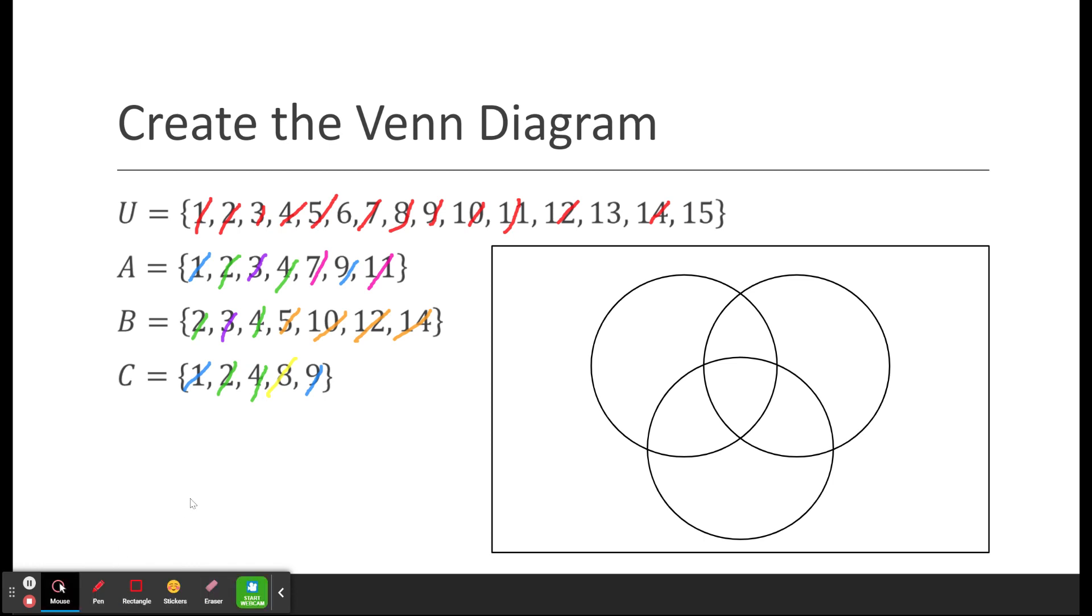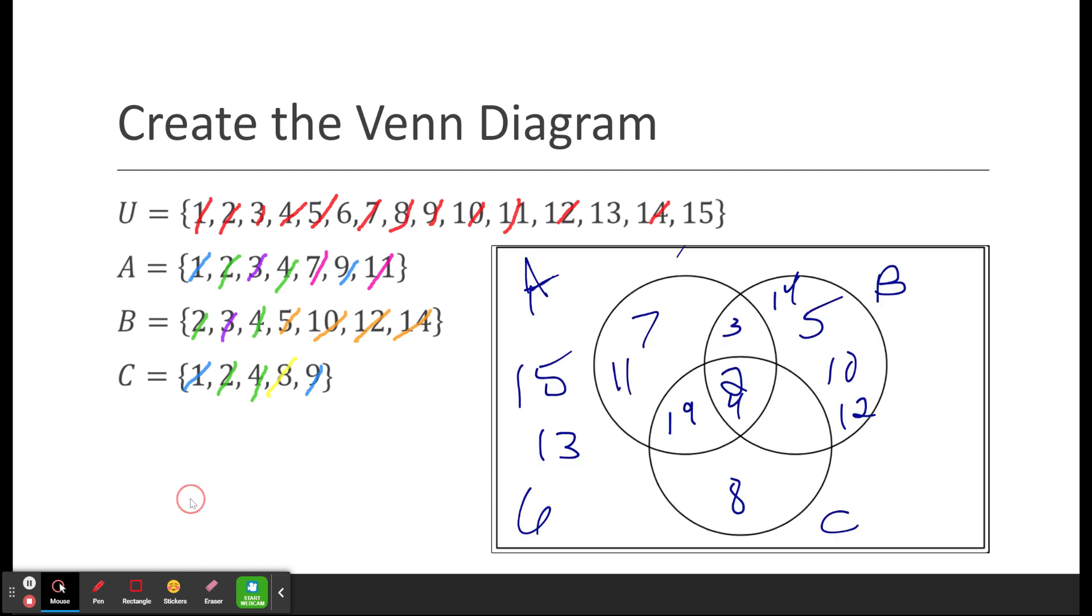So if I did everything right, hopefully I did, I should wind up with this. So you can see here I've got 2 and 4 in the middle, and I've got the overlap over here, 1 and 9. And there's no overlap on this side, and the overlap between A and B is just 3. Then I've got the individual ones that are in A, 7 and 11. I've got B has 5, 10, 12, and 14. C has 8. And then the other ones go on the outside, 6, 13, and 15. So that is kind of how you do these.